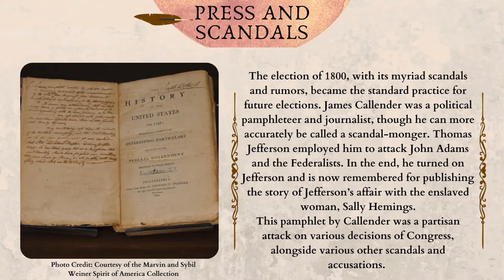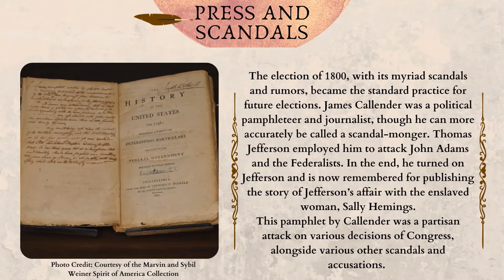Press and Scandals. The election of 1800, with its myriad scandals and rumors, became the standard practice for future elections. James Callender was a political pamphleteer and journalist, though he can more accurately be called a scandal-monger. Thomas Jefferson employed him to attack John Adams and the Federalists. In the end, he turned on Jefferson, and is now remembered for publishing the story of Jefferson's affair with the enslaved woman Sally Hemings. This pamphlet by Callender was a partisan attack on various decisions of Congress, alongside various other scandals and accusations.